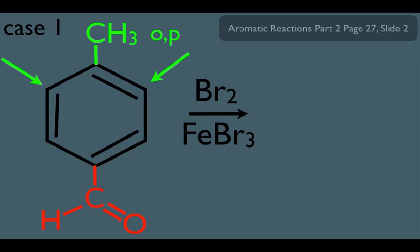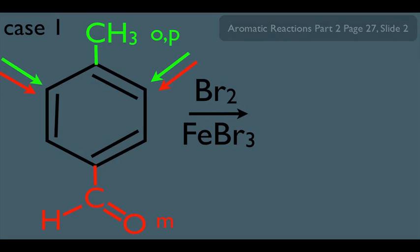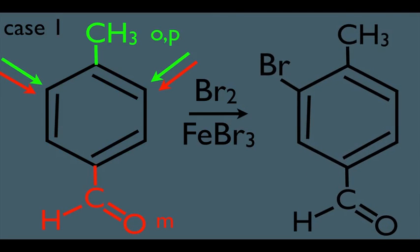Now let's look at the bottom substituent. It happens to be a meta-directing deactivator, so he'd like to add the electrophile meta to him. Well, that position happens to be the exact same position. So in this case, it's a no-brainer — both substituents want the newly added electrophile in the exact same location. To get the product, we simply add it right there; adding it to the left or right ortho position doesn't matter, it ends up being the same molecule anyway.